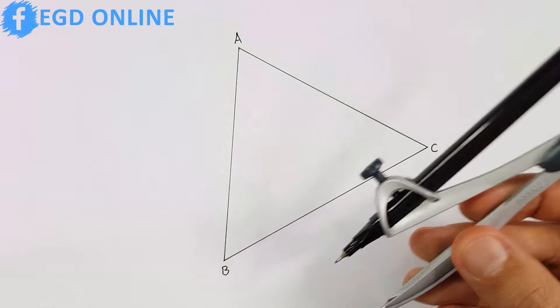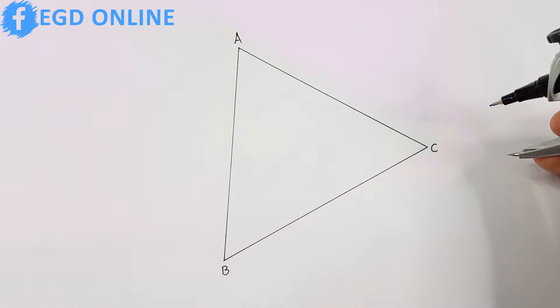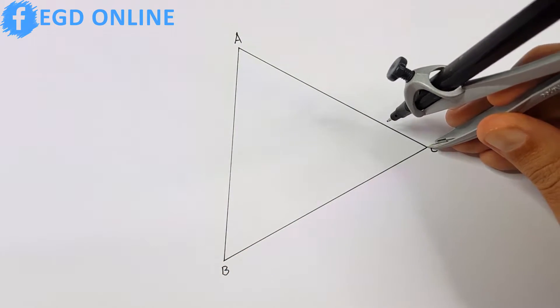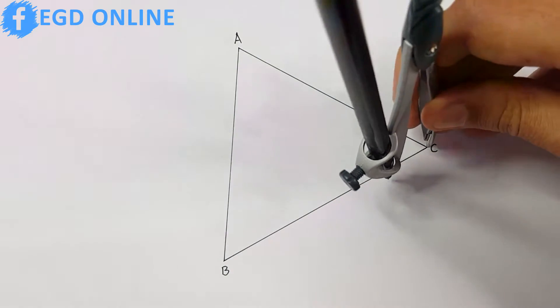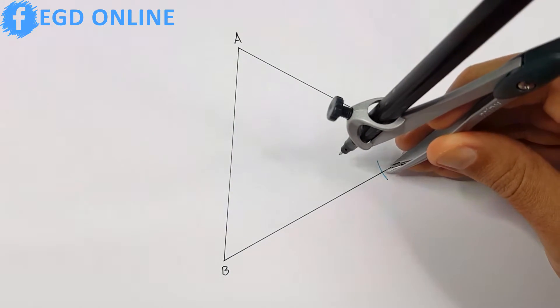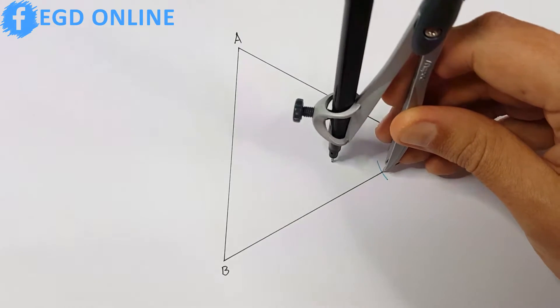For this method, we will require our compass. We will have to divide two of our three angles to determine the middle point of our circle. For today's example, I will divide angles C and B.